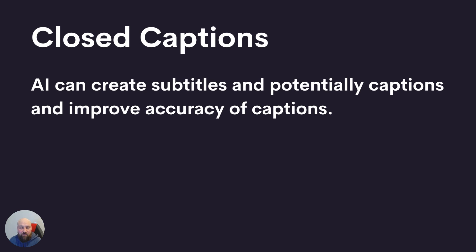Relatedly, with closed captions, AI can help you with these. AI can create subtitles and potentially captions if it has access to the different visuals in the video, and it can also improve the accuracy of captions. You will notice that the accuracy of subtitles varies across different tools. Just to be clear, subtitles are going to be only the spoken dialogue, while captions are going to include any meaningful noises that are in the video. But AI can help you with closed captions right away.